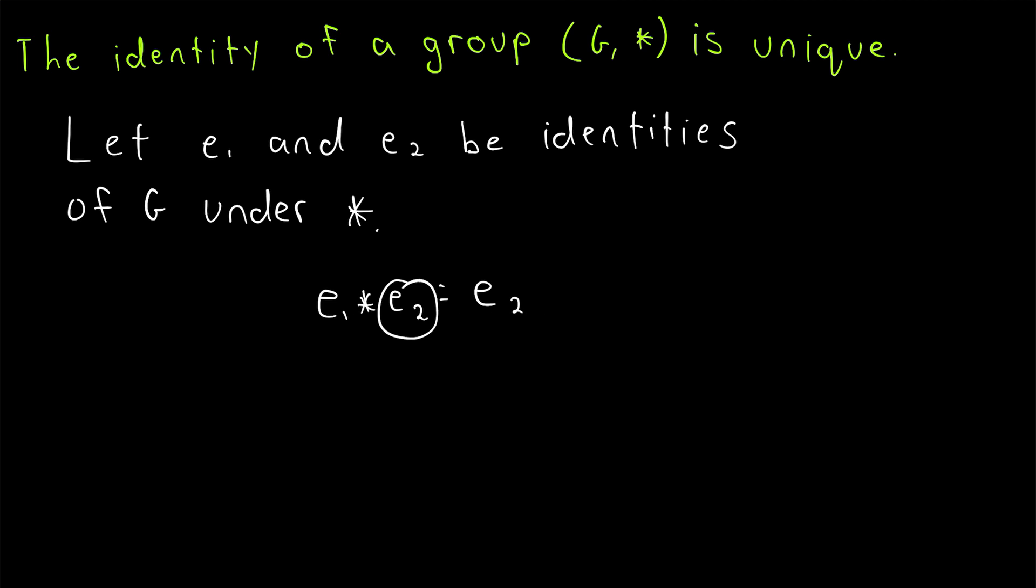However, since e₂ is also an identity, when we combine e₁ with e₂, e₁ also remains unchanged.